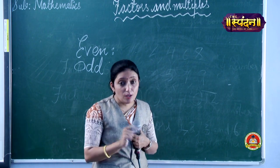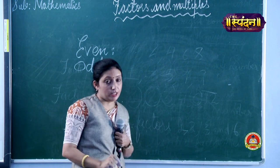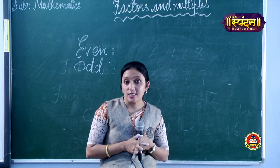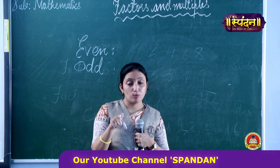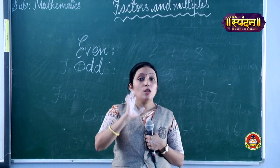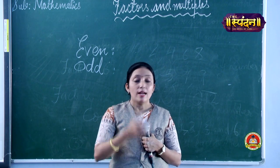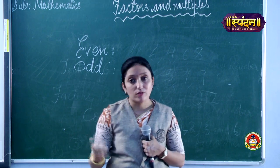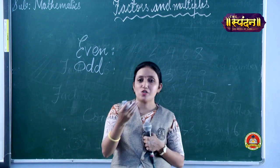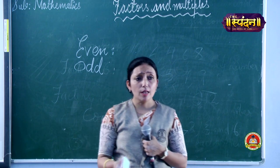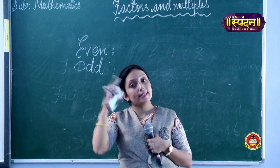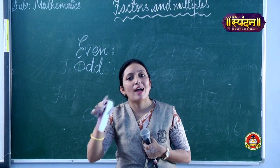So this covered: what is a factor, properties of factors, common factors, and odd and even numbers. Knowing your tables is very important for all of this — multiplication and division both. This covers exercise 5.1, and now I am giving a brief introduction to multiples so you can compare what factors and multiples are.